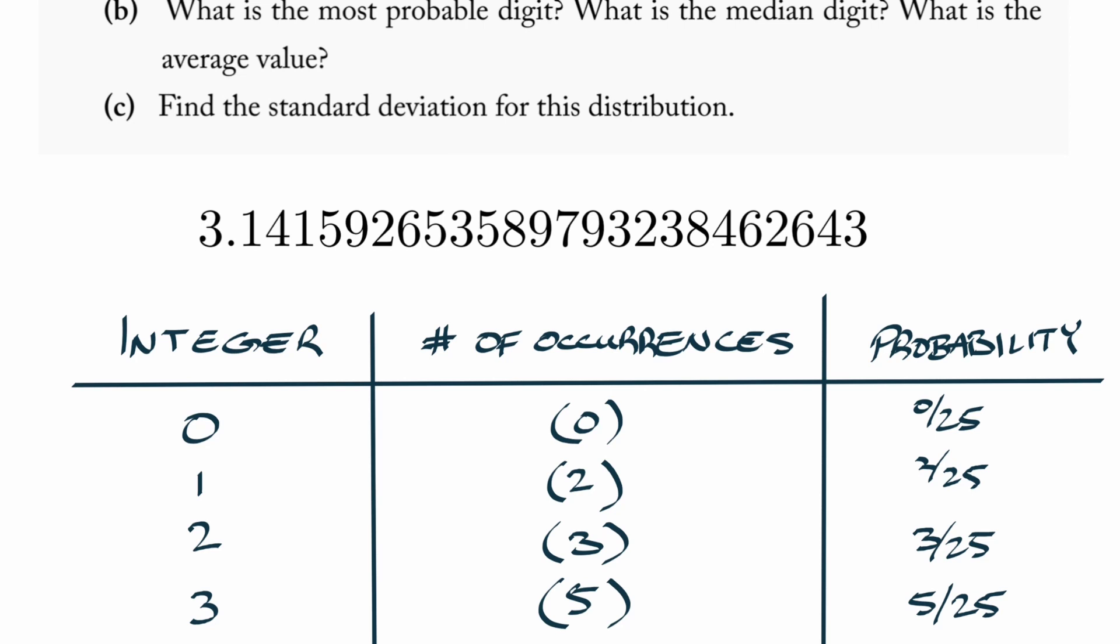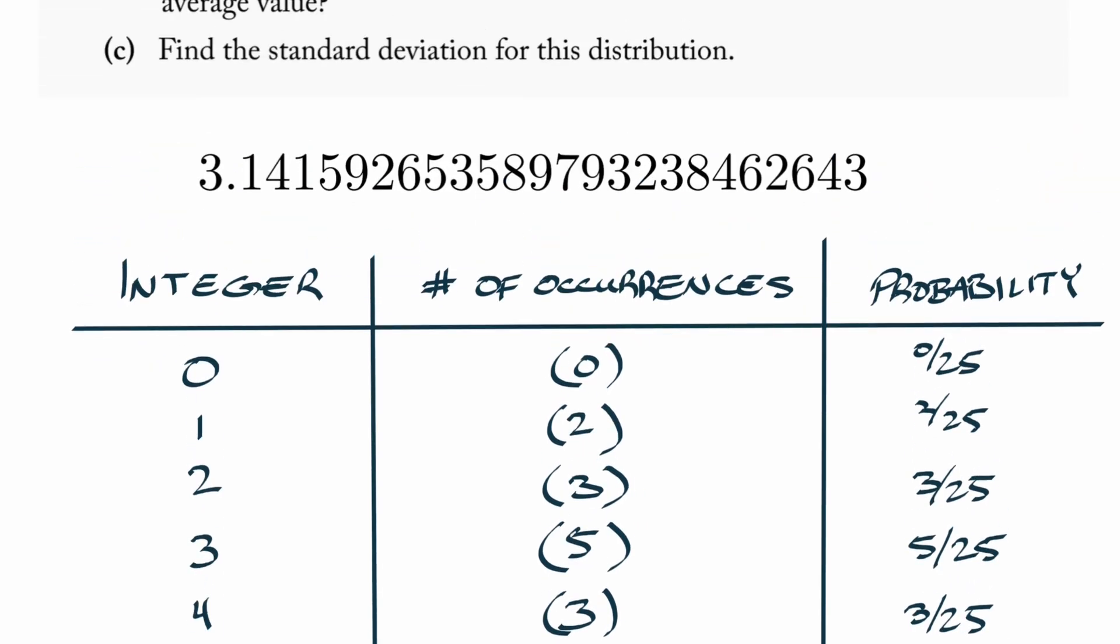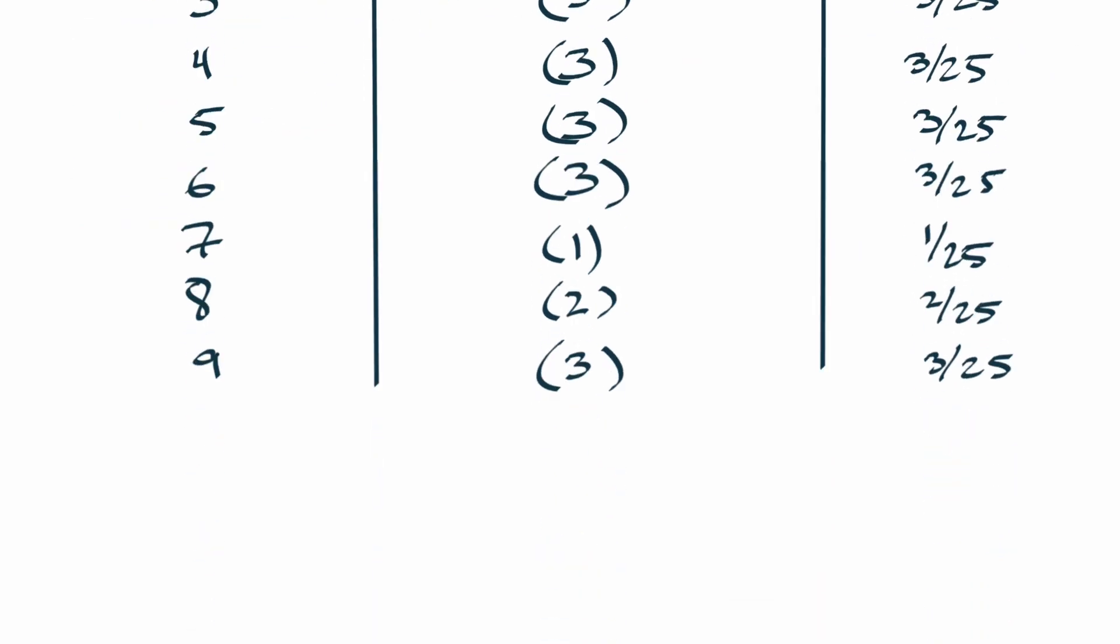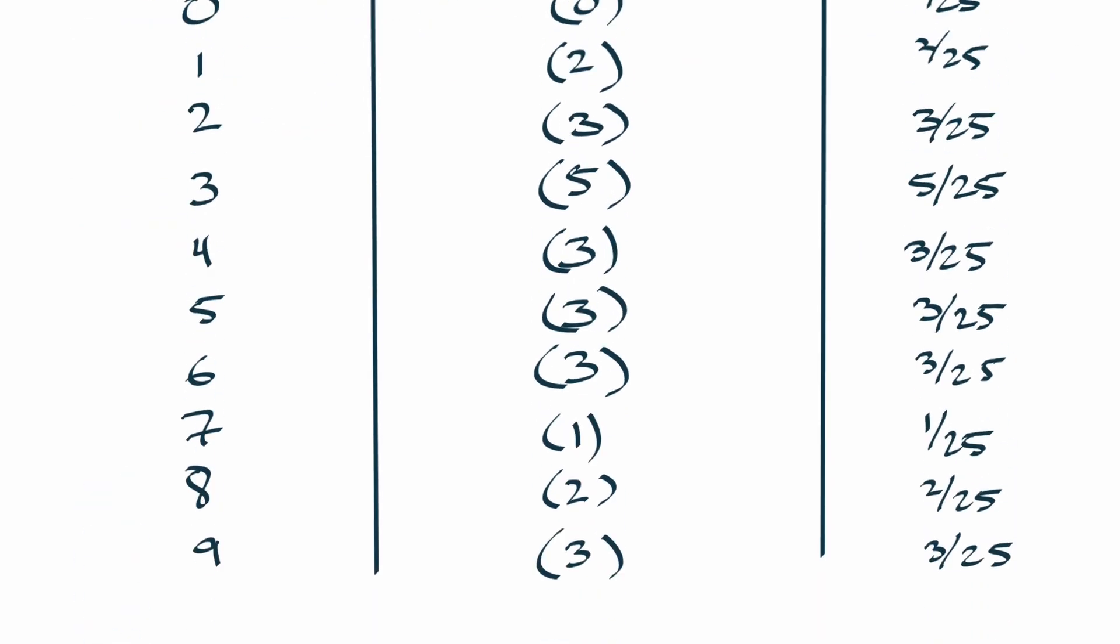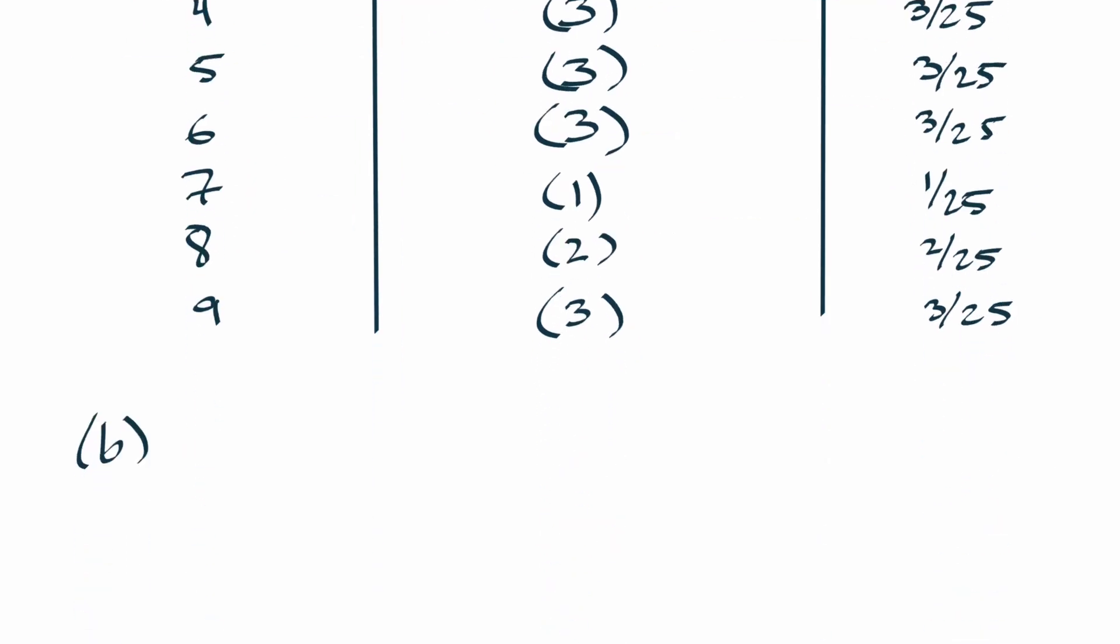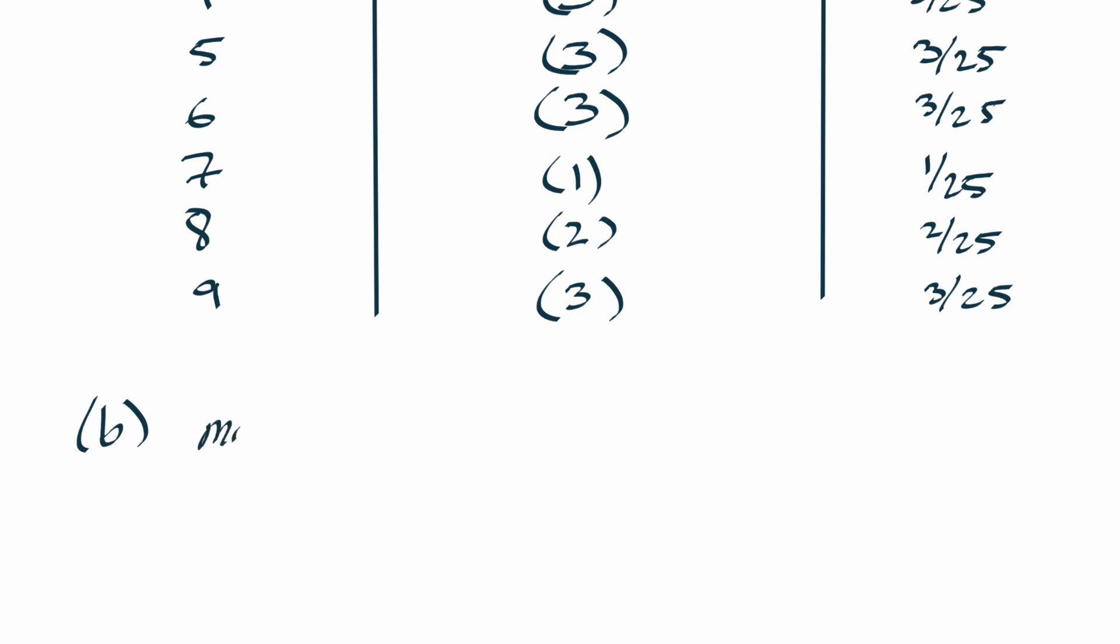So that is part a, these are the occurrences and the probabilities of getting each of these digits if we just picked one at random. Part b: what's the most probable digit? Well, the most probable is pretty obvious if you look at the table. Number three has five instances, it's got a 20 percent probability, so the most probable digit is three with a 20 or 0.2 probability.